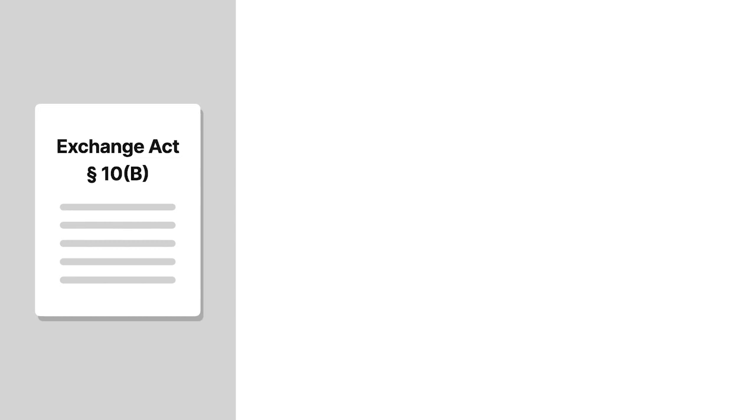To state a private cause of action for securities fraud under Section 10b of the Securities Exchange Act of 1934, plaintiffs must plead six elements. First, a material misrepresentation or omission. Second, scienter.